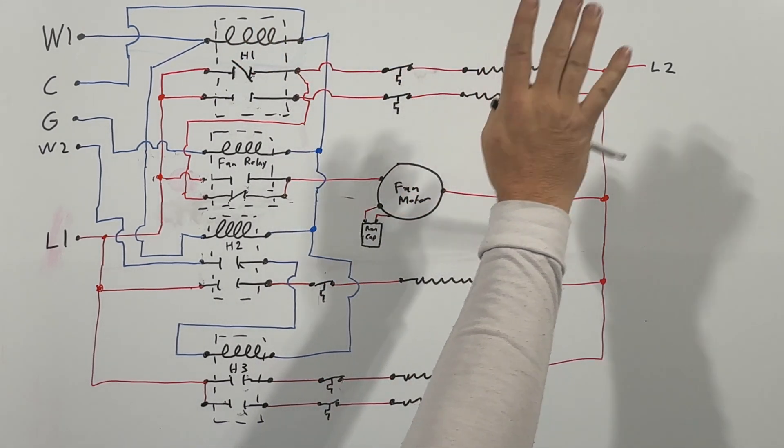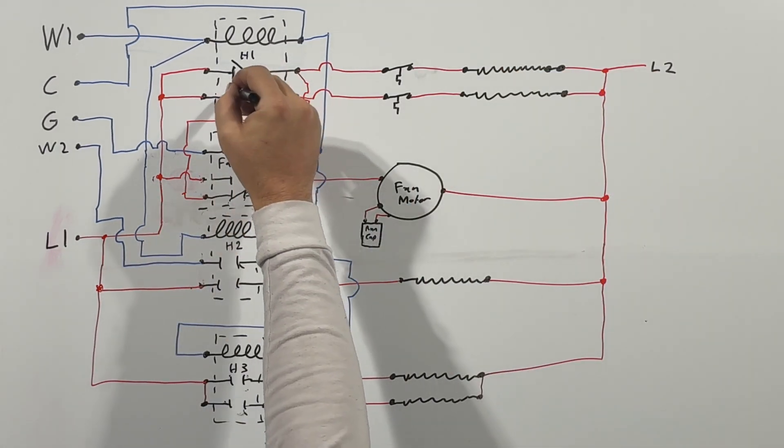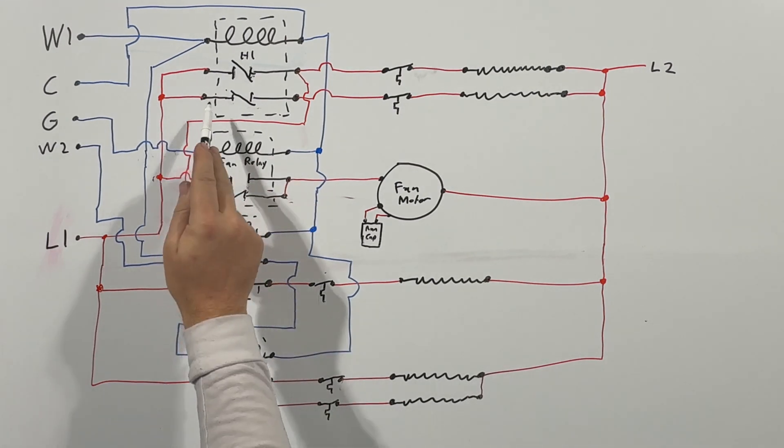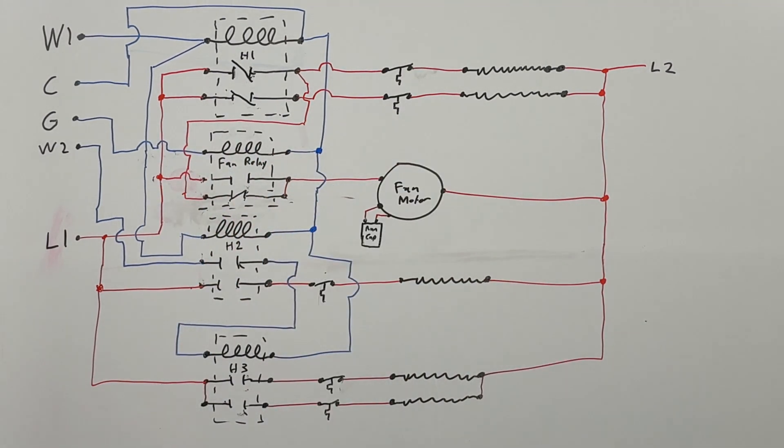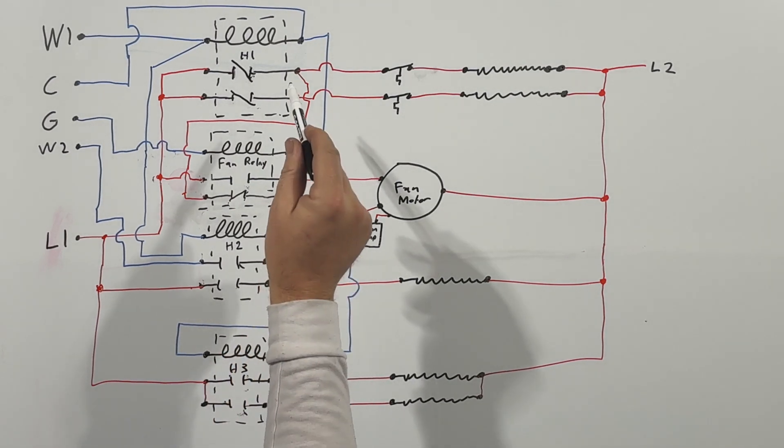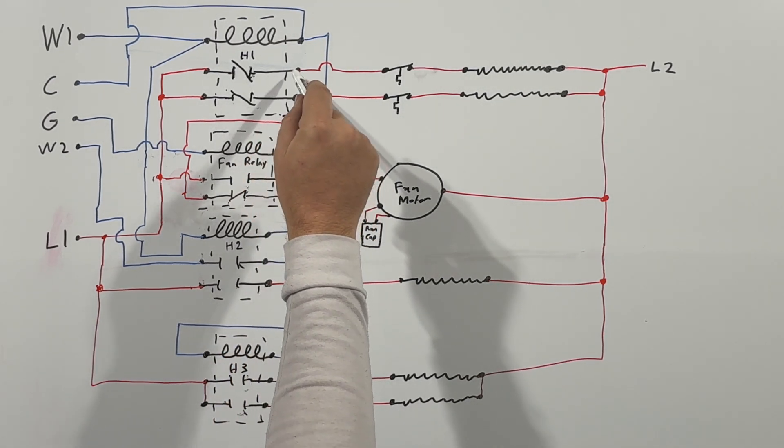Then going to L2, then our second contact will close. Same thing, it'll continue through and go through there. Alright, now I see that once this first contact closes, not only is the first heating element going to be energized, but we also have another high voltage line that reads down to our fan relay.